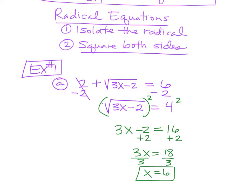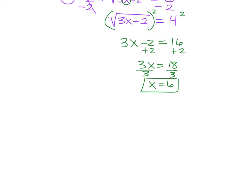My recommendation on this is if you're not sure, check it. Plug it back in. So go back up to our original, put a 6 in there. 3 times 6 is 18, 18 minus 2 is 16, the square root of 16 is 4. So basically we're saying 2 plus 4 equals 6. True story. So it checks out. You can always go back and check your work on those problems.